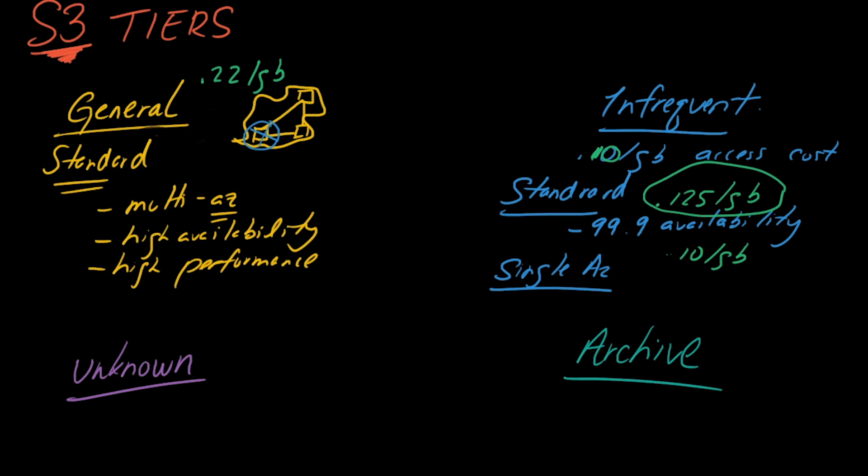So moving down to unknown now. So the primary tier within the unknown category is intelligent. And just to recap on unknown it's basically if you're not really sure what your access pattern is going to be yet. So you don't know whether to pick standard or infrequent or single AZ or whatever. So this is a good place to start if you're not really sure what your access is going to look like.